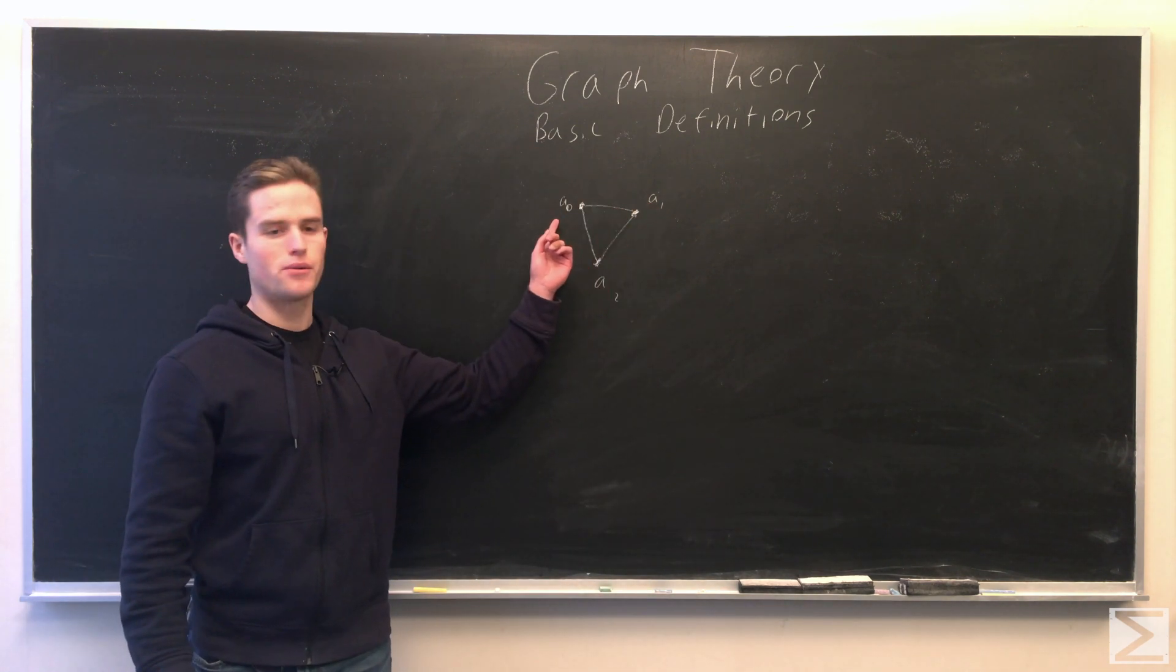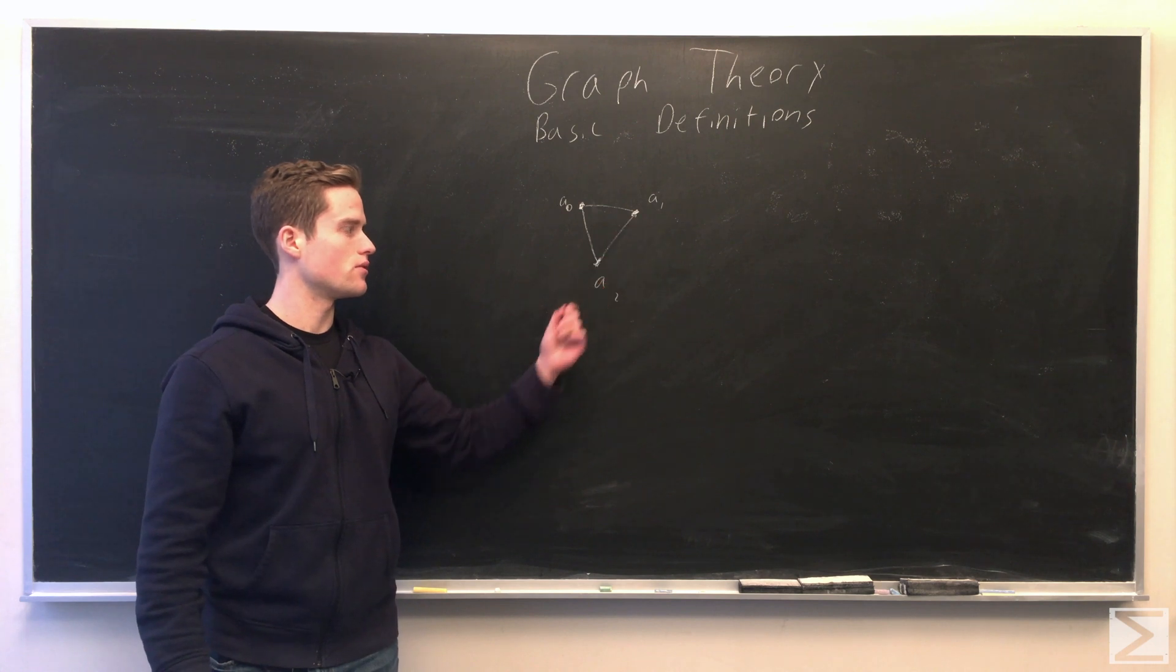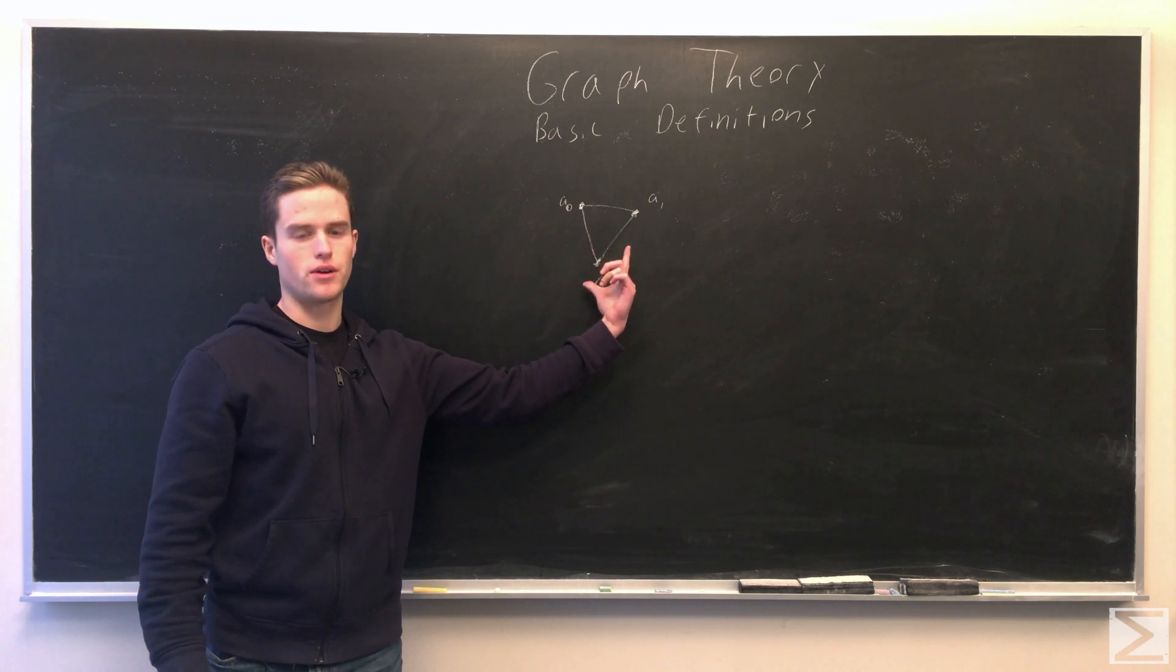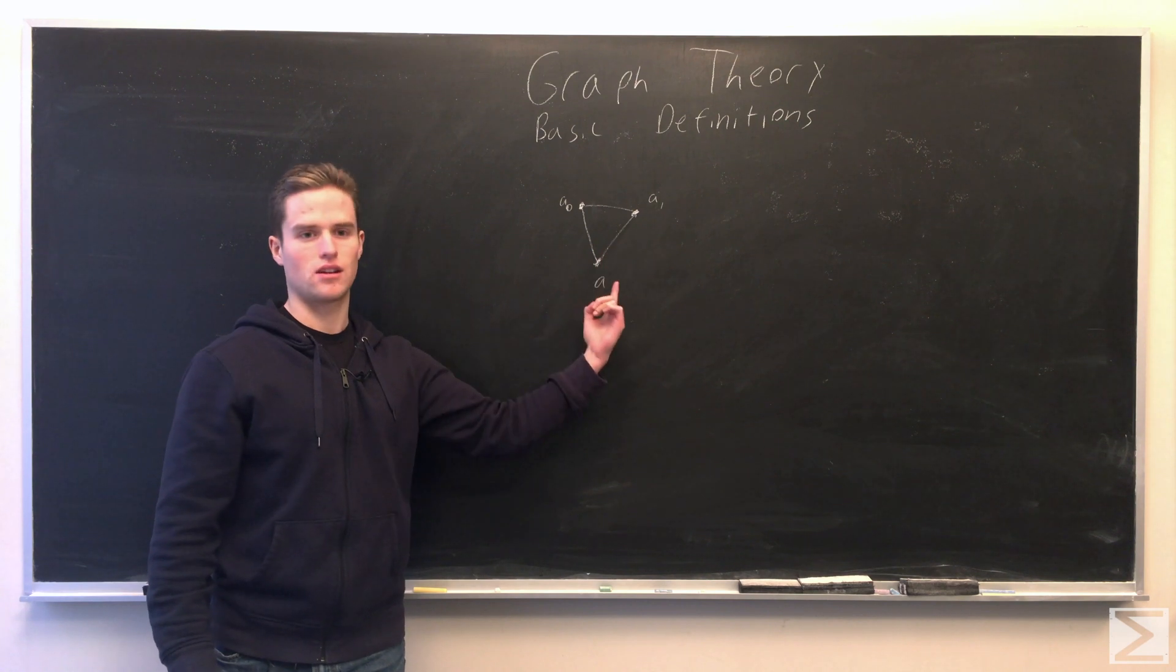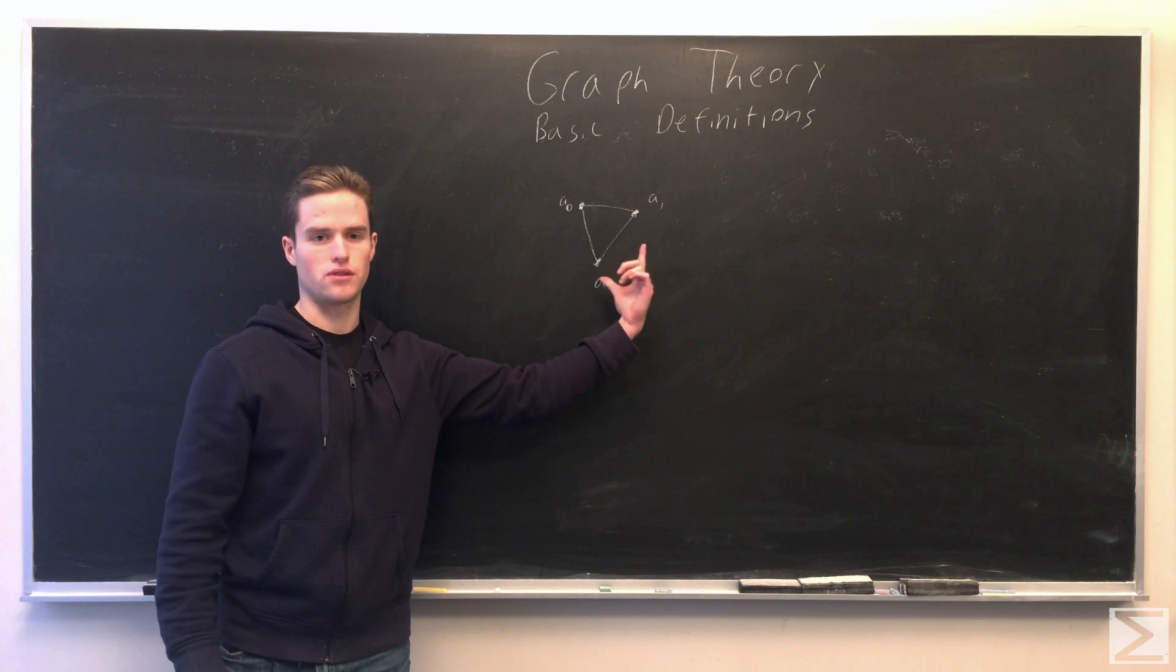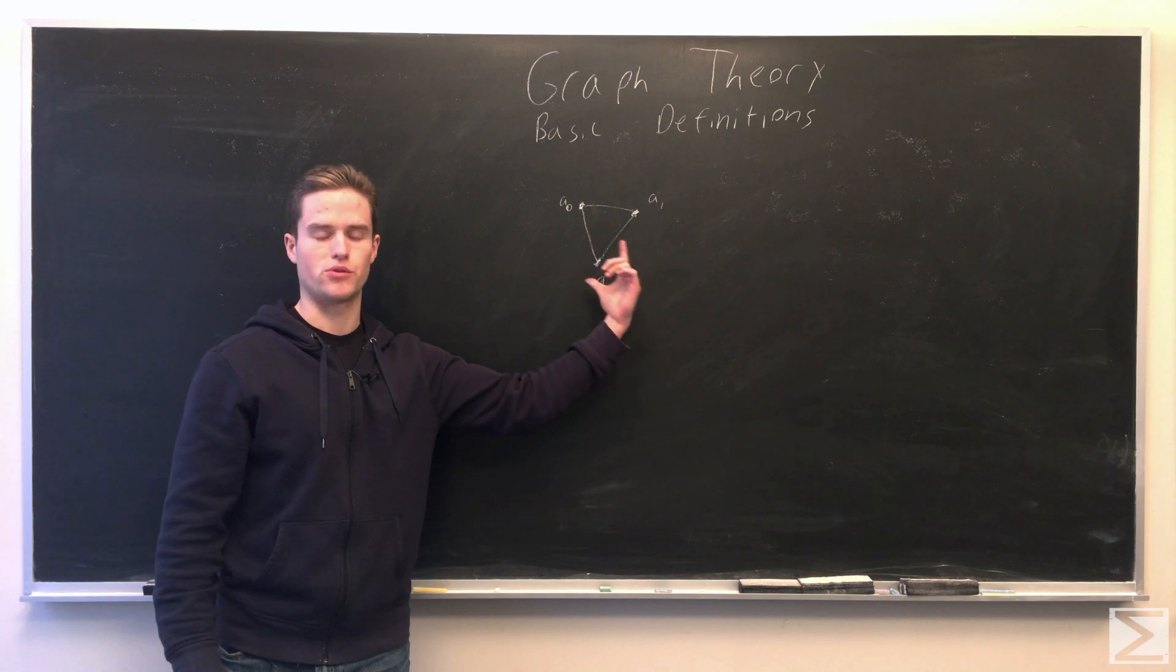This is a graph. I can label my vertices, call this A0 or A1, A2. A1, A2, I say there's a relation between these two that's symmetric. A1 is connected to A2, A2 is connected with A1. This relation, I call it an edge. There's an edge between these two vertices.